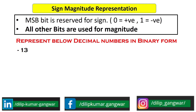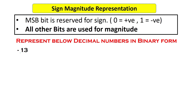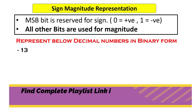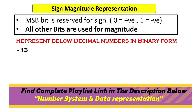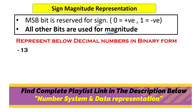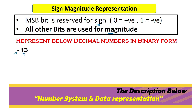To understand sign magnitude representation, let's take an example. We have the number minus 13, which is a decimal number. We have to convert this integer into binary form using the sign magnitude representation. The process requires understanding two things: the concept of magnitude and the sign bit. In minus 13, the negative sign is the sign and 13 is the magnitude.